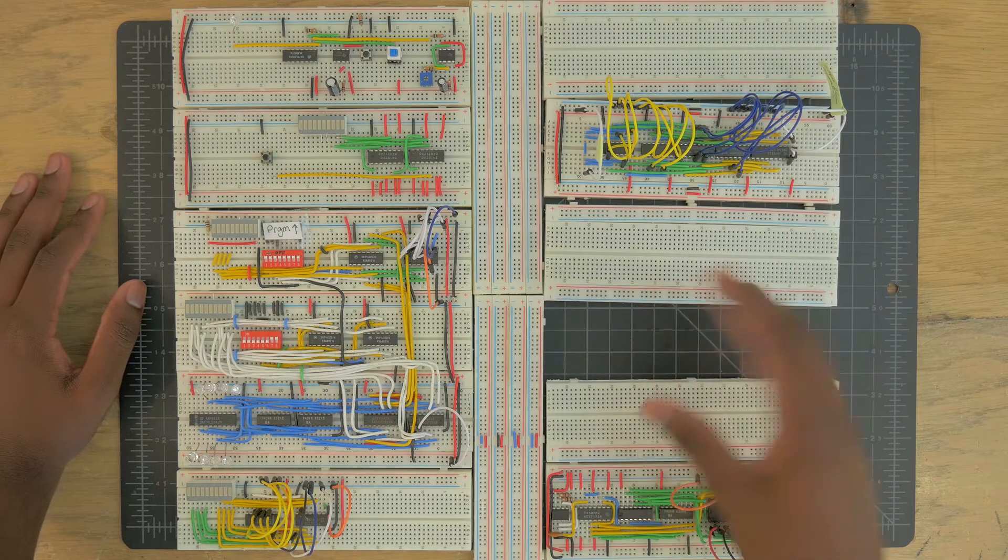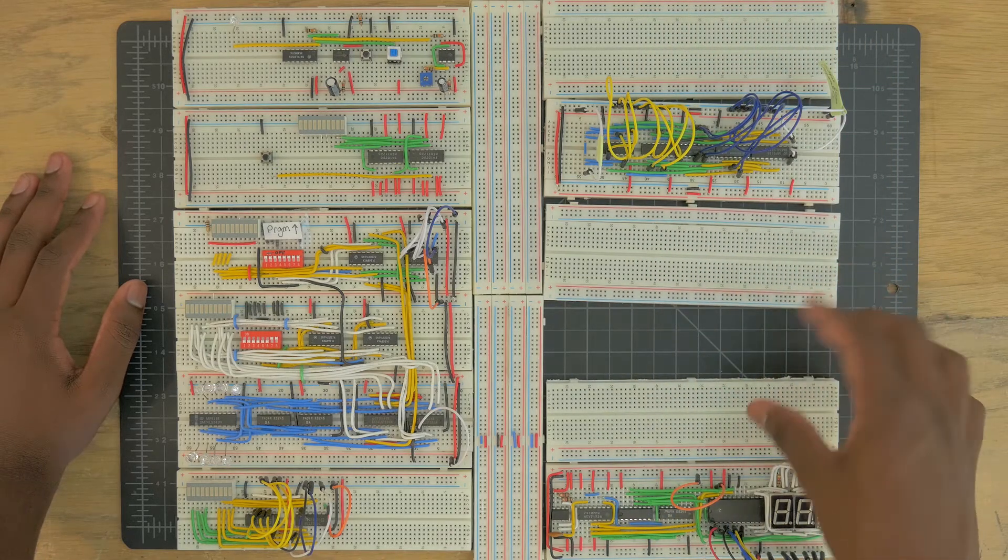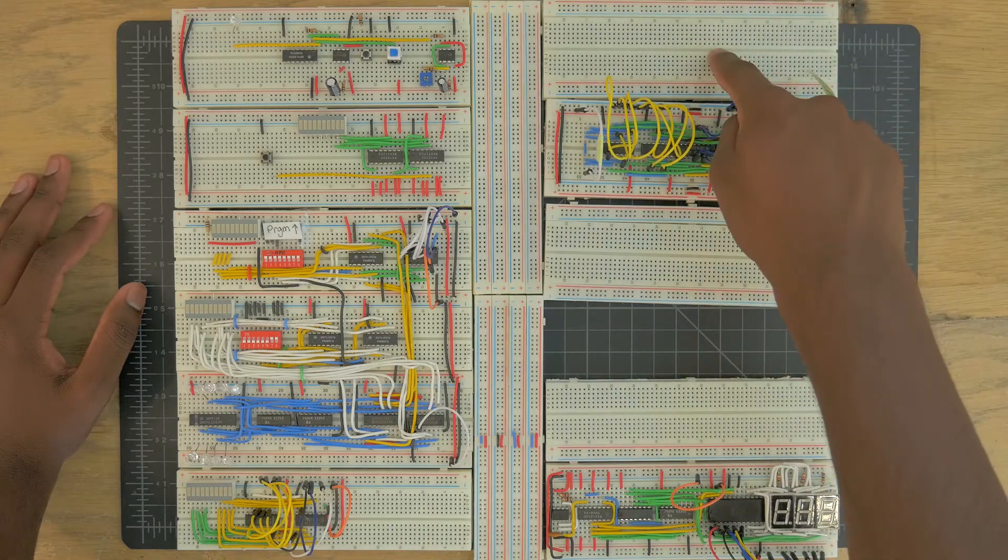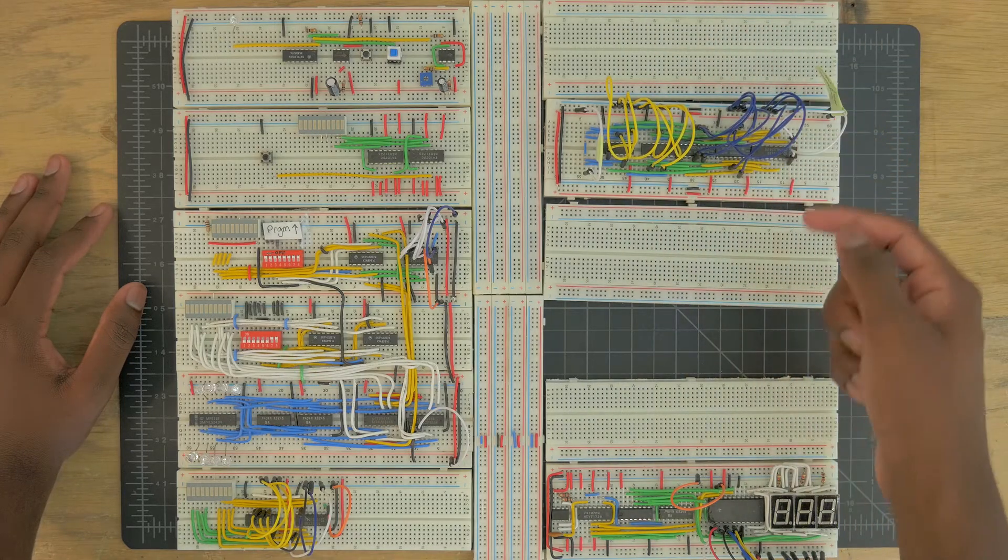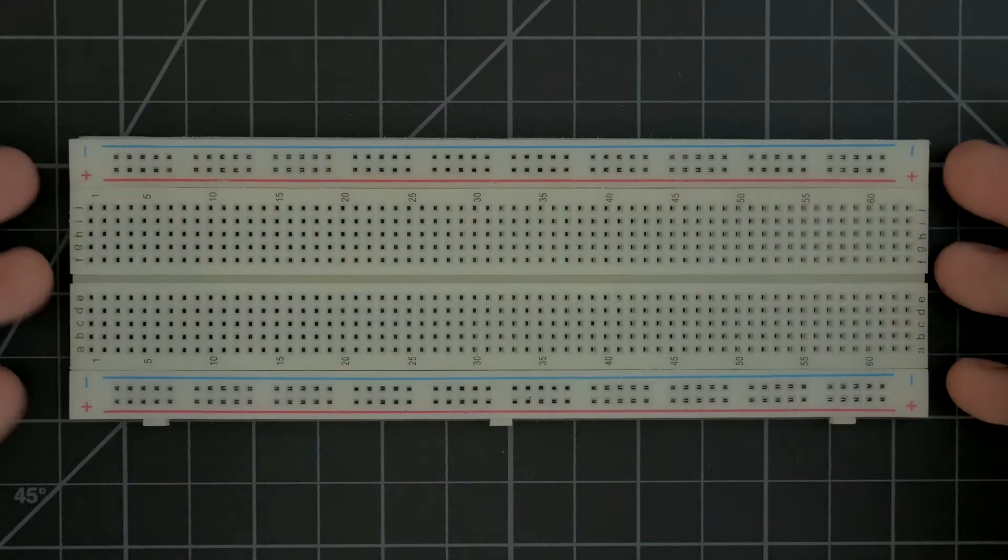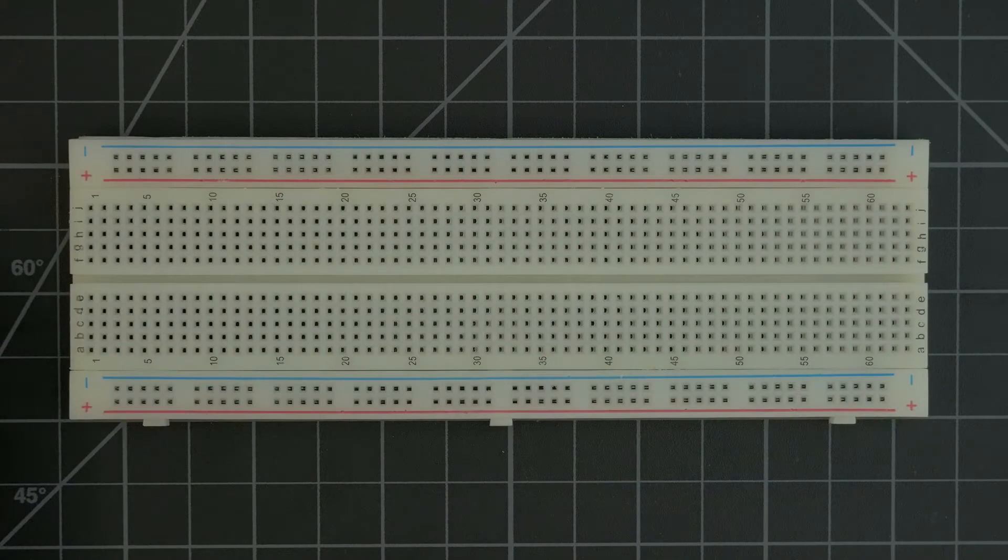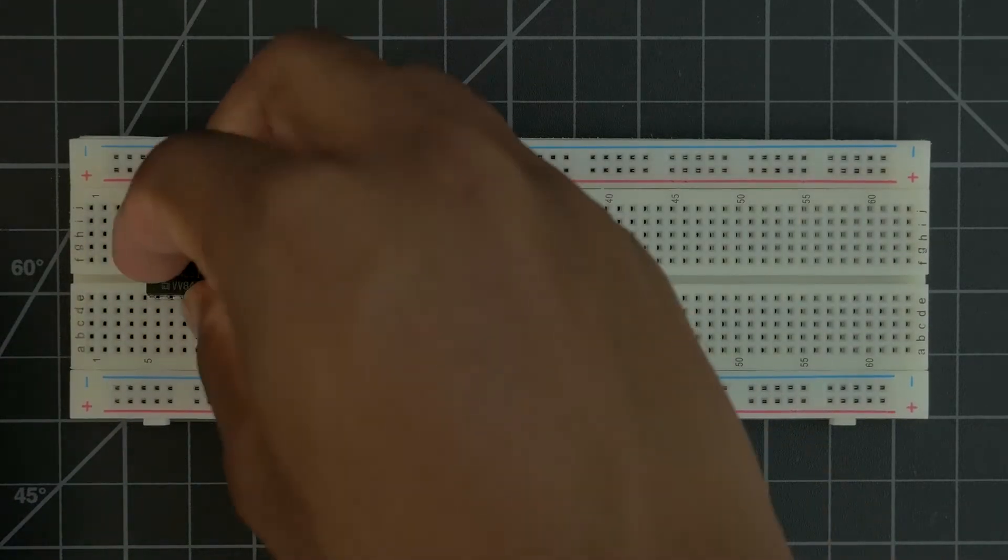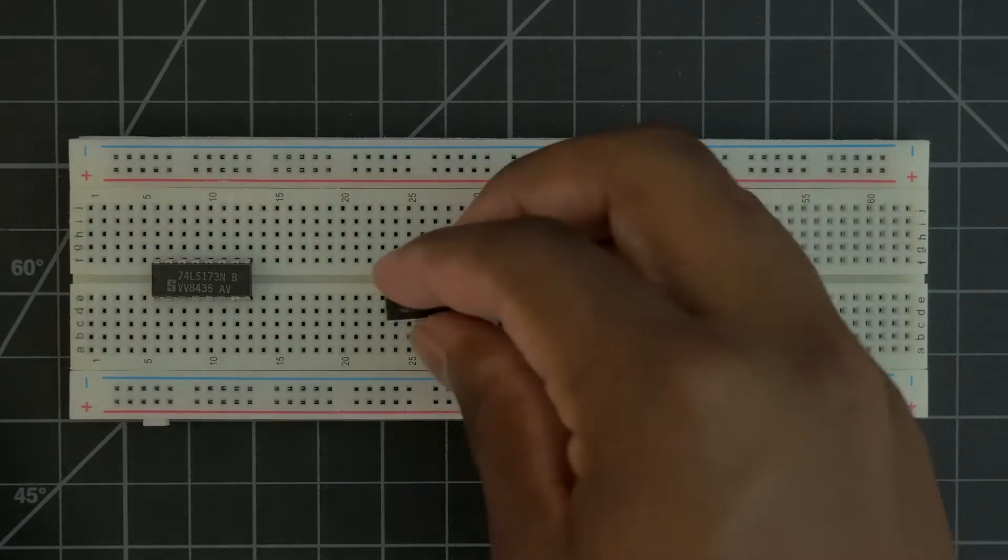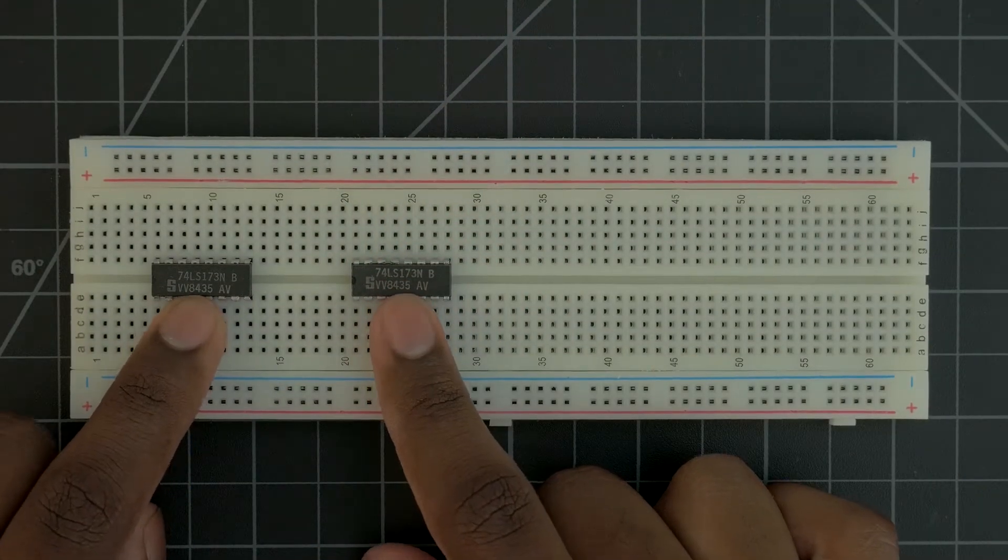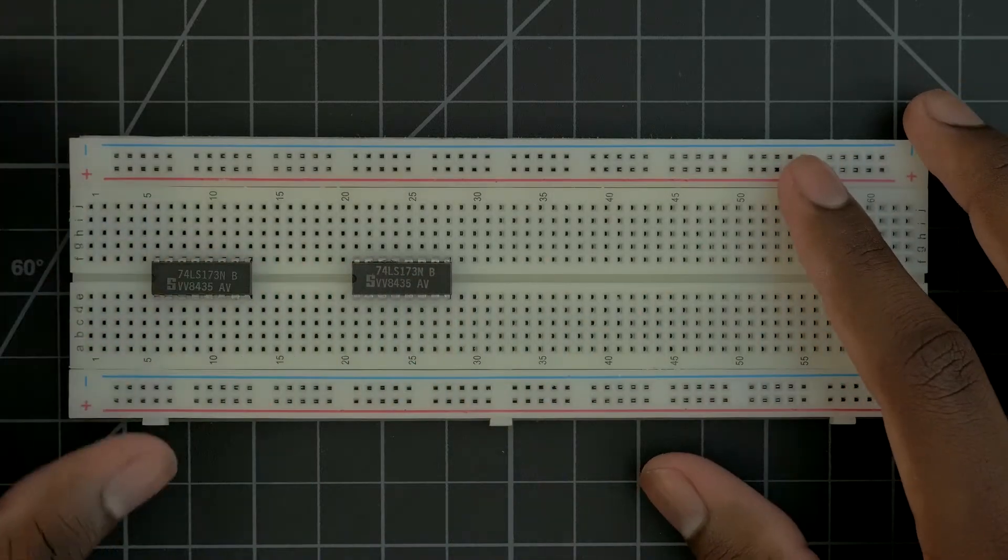Now the good thing about registers is they're all basically the same. And the way that we're using them, they're all basically going to be the same. So what I'm going to do is I'm just going to build one for you guys, and then you guys can just watch this video three times and build the other two. Now all of our registers are going to start exactly the same. We're going to have two 4-bit registers. Now I only have 4-bit register chips, which is the reason why I'm using this. But you can buy 8-bit registers and only have one chip.